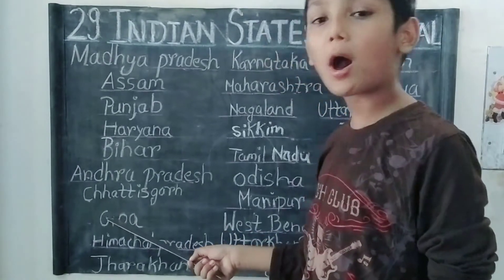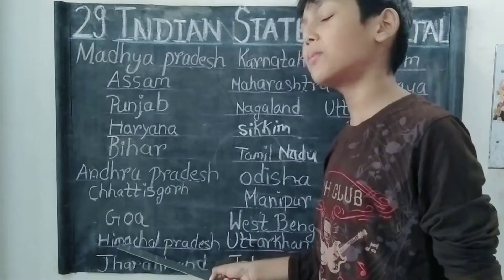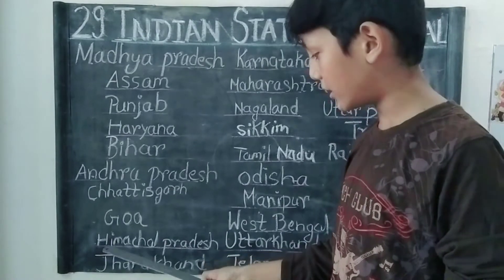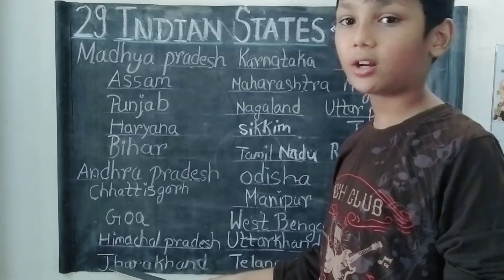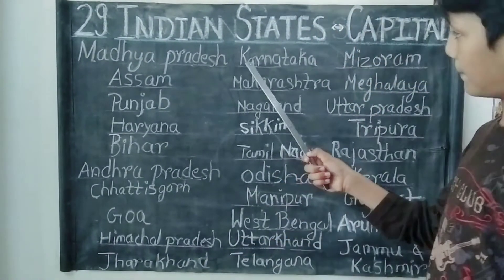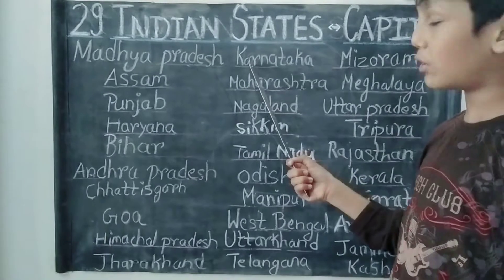The capital of Goa is Panji. The capital of Himachal Pradesh is Shimla. The capital of Charkand is Ranchi. The capital of Karnataka is Bangalore.